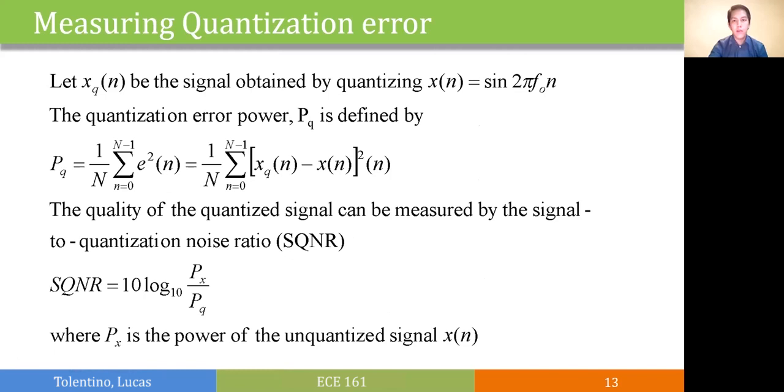Aside from computing the error signal, we can also measure the quality of the quantized signal using the signal to quantization noise ratio, or SQNR, which is defined as 10 log base 10 of Px over Pq, where Pq is the power of our error signal, of our quantization noise.